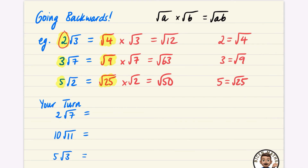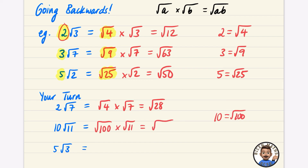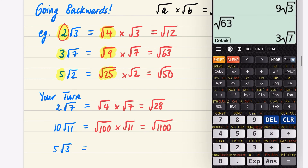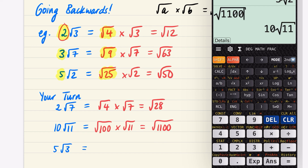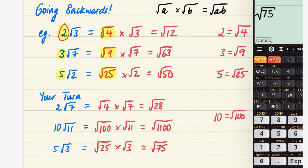You've got three questions to try. Here are the answers: For 2√7 — 2 is the same as √4, so it's √4 × √7 = √28. For 10√11 — 10 is the same as √100, so it's √100 × √11 = √1100. You can confirm that √1100 = 10√11. For 5√3 — 5 is the same as √25, so it's √25 × √3 = √75. And √75 = 5√3.